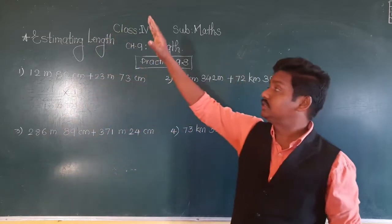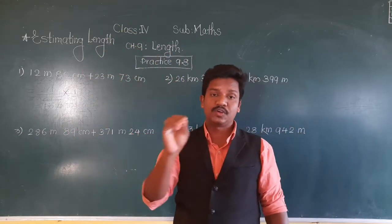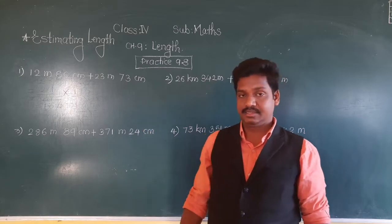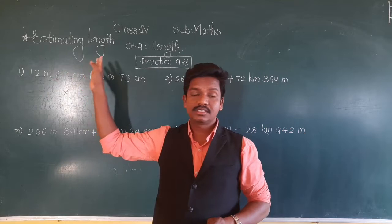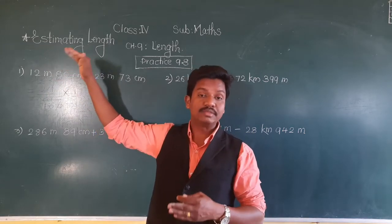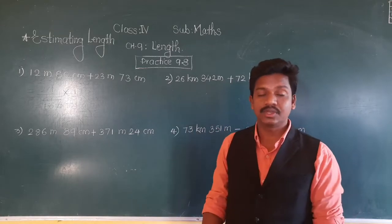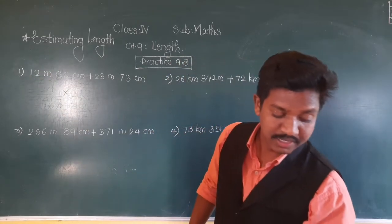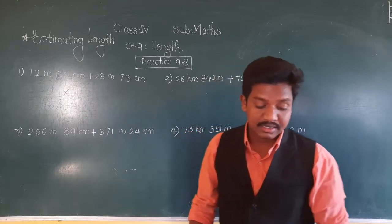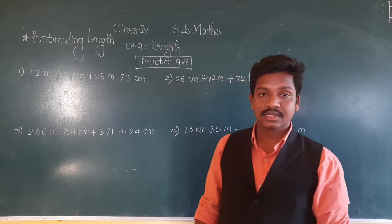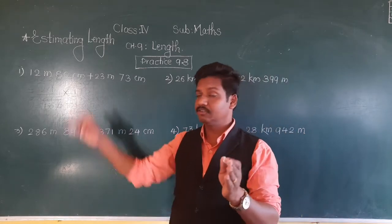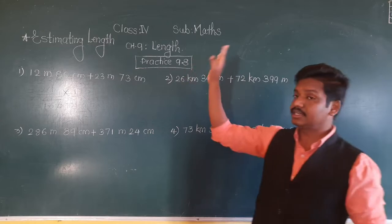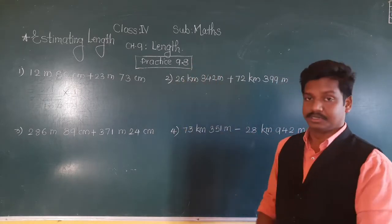In Practice 9.8, we are going to estimate the sum and difference — meaning addition and subtraction of length. We will learn how to round up the length, how to estimate the length. The question says: estimate the following by rounding off to the nearest meter or kilometer. Nearest meter means if length is given in meter and centimeter, convert to meter. If given in kilometer and meter, round off to the nearest kilometer.